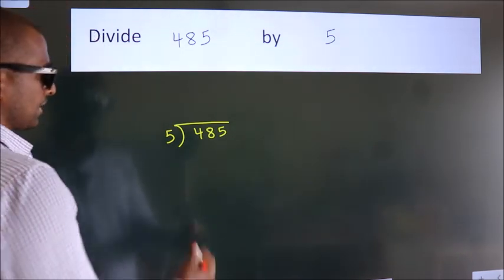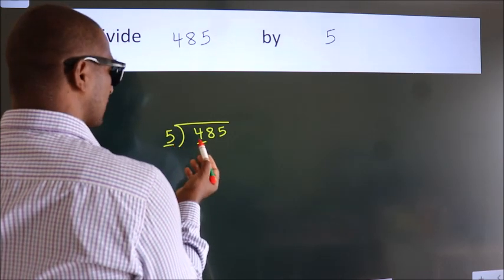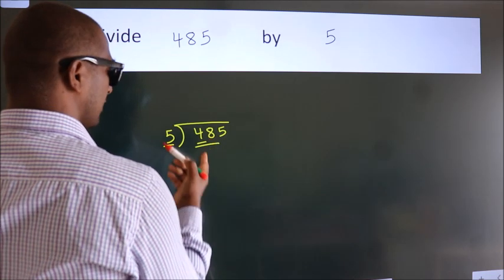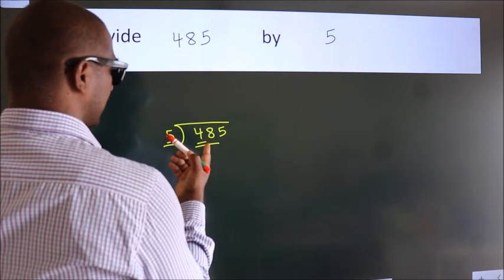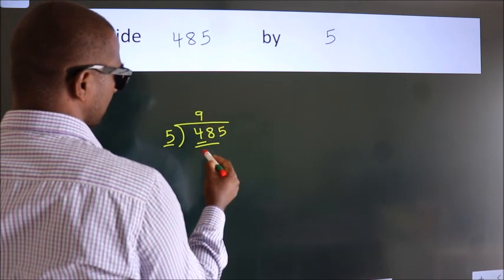Next, here we have 4. Here 5. 4 is smaller than 5, so we should take two numbers: 48. A number close to 48 in the 5 table is 5 nines, 45.